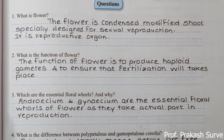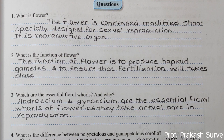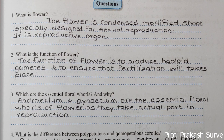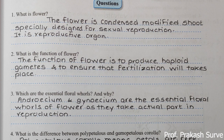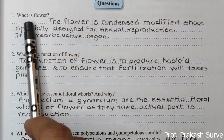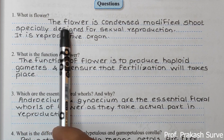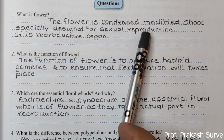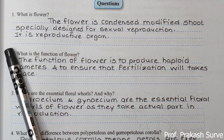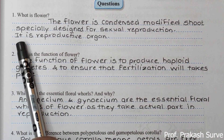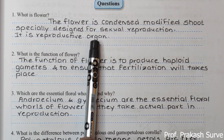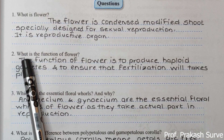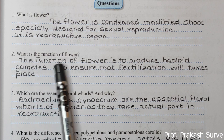Welcome dear student. Today we'll see the question answers as well as the viva voce of the dissection of hibiscus flower. First question: what is a flower? A flower is a condensed modified shoot specially designed for sexual reproduction, or simply we can say it is a reproductive organ — all reproductive parts are present in it.